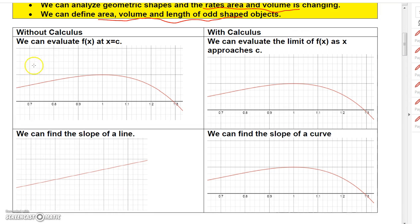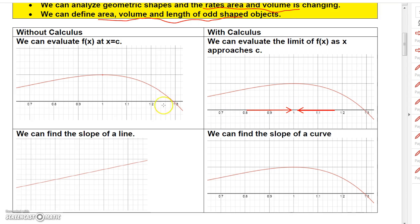Without calculus — with just algebra or geometry — you can evaluate a function at a specific value, say x equals one. But with calculus, instead of evaluating it at one, we can talk about what would happen if we approached the number one from either side. So with calculus you can evaluate the limit of the function as x approaches one. We'll talk more about that later.